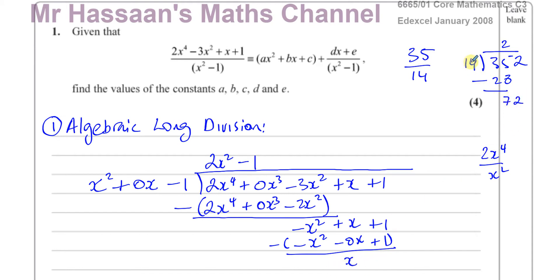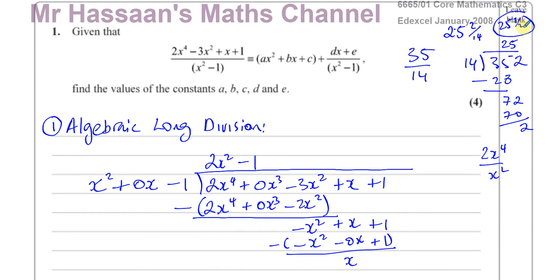Just like in a numerical long division where you end up with a whole number and a remainder expressed as a fraction over the divisor, the same applies here. What's left over is the remainder, and if you want to express it as a fraction, you write it over the original denominator. So you end up with a whole number part and a proper fraction part.